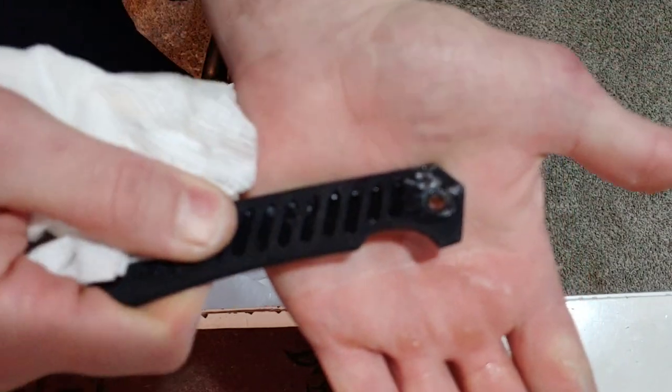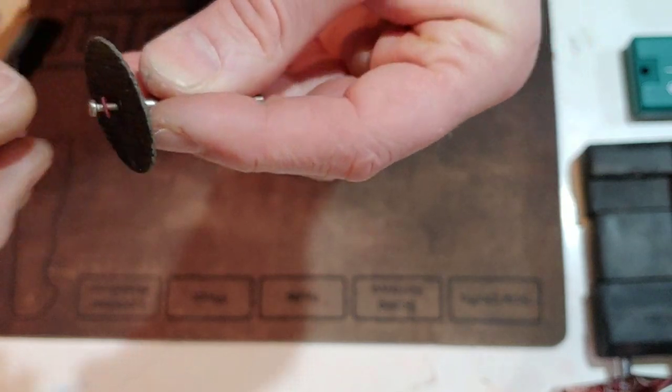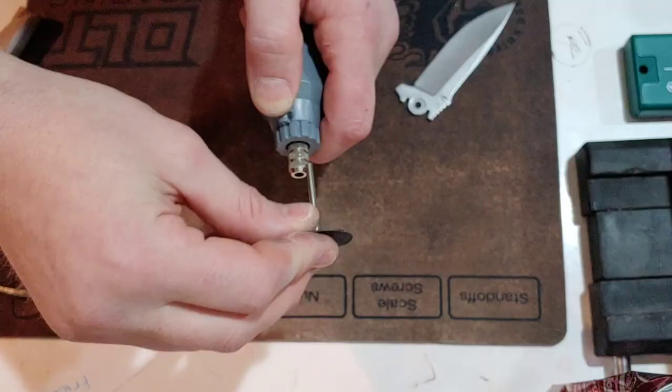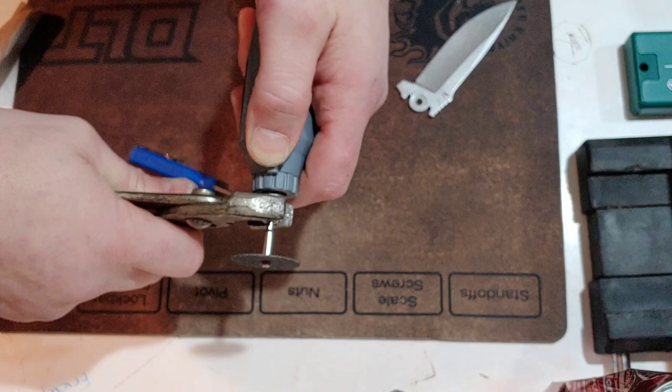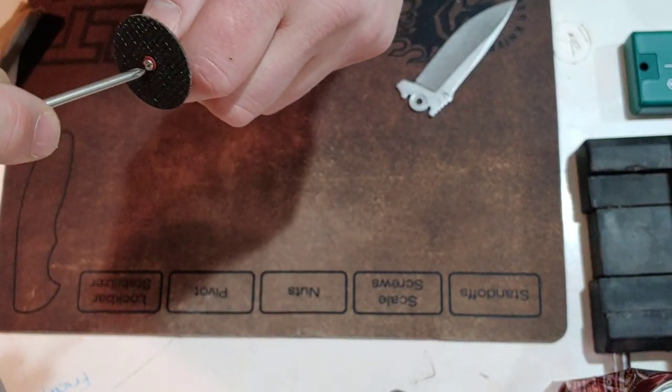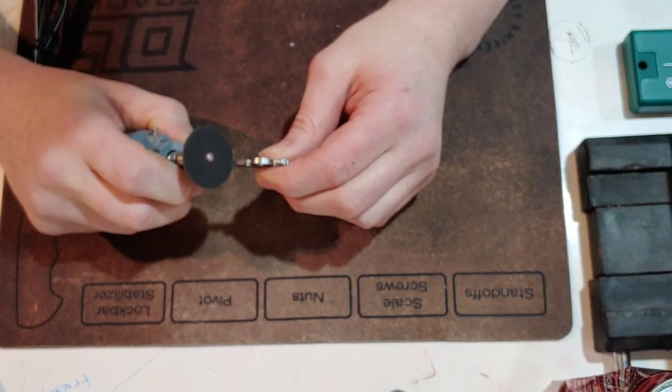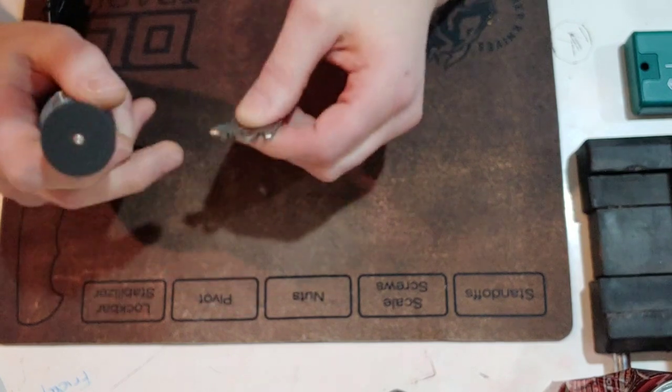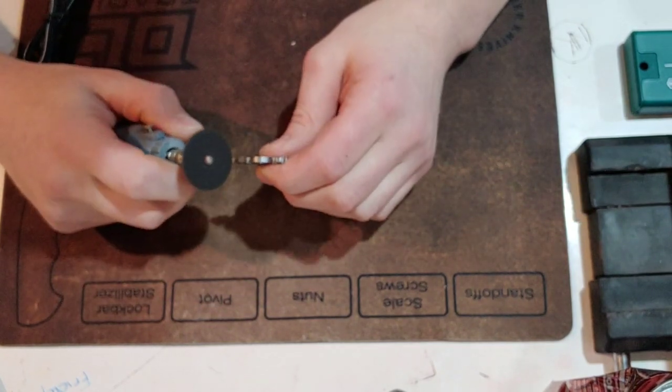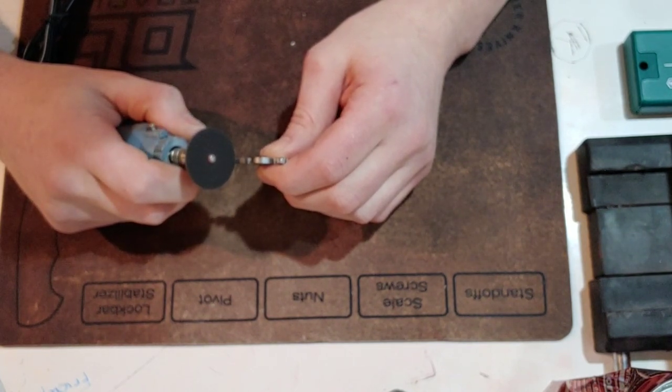So after that, the one other little small issue I had was the flipper tab was slick. And even though the action was still pretty decent on it, I figured this is a good opportunity to add some jimping. So I took the blade and went to the flipper tab, and I took my cutting bit. It's just a cutting wheel you would use to cut screws or whatever you want to cut. And I cut in some jimping onto the flipper tab, which, oh, I'm so happy I did. Sometimes when you have a flipper tab that's slick, it just improves it so much to add some texture.